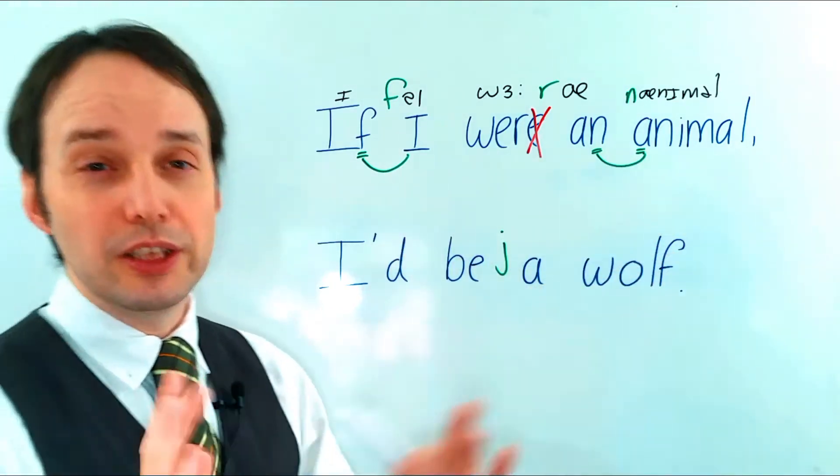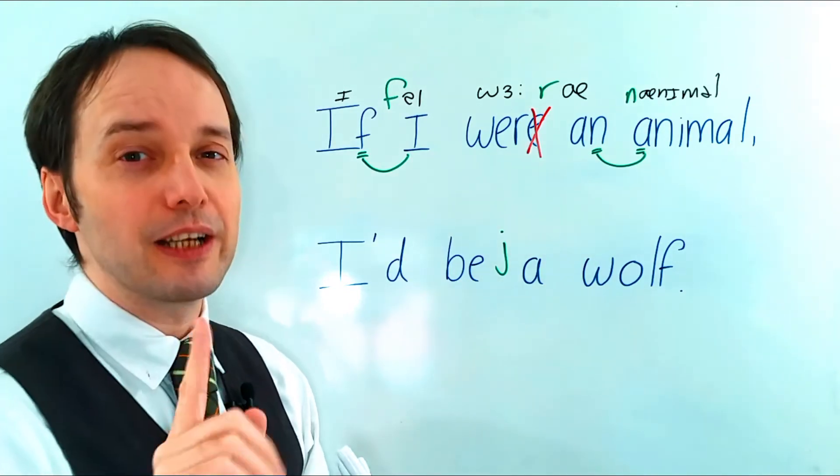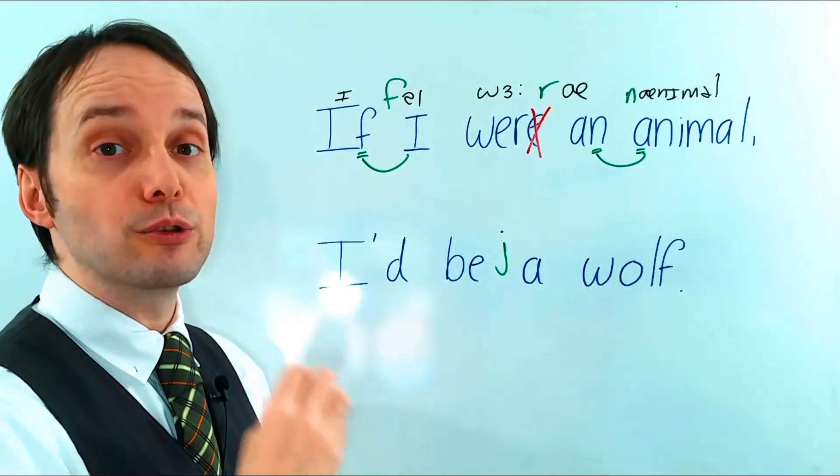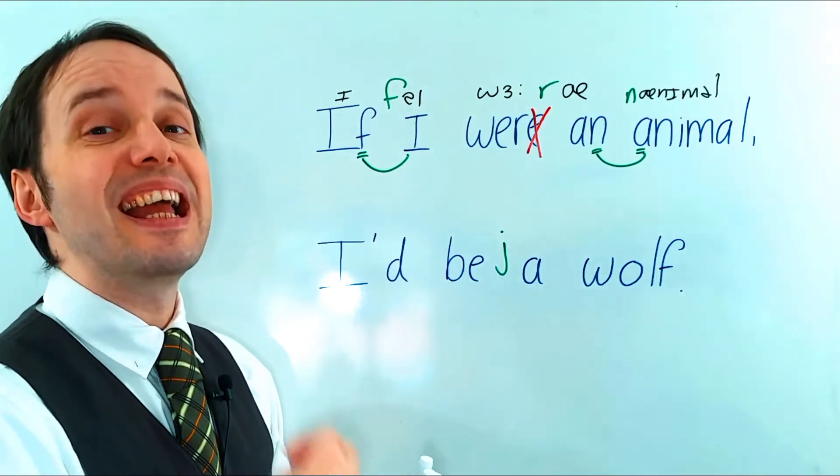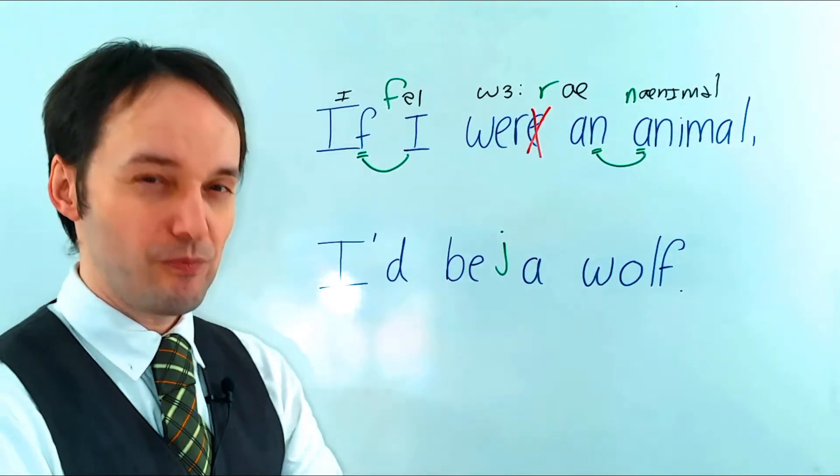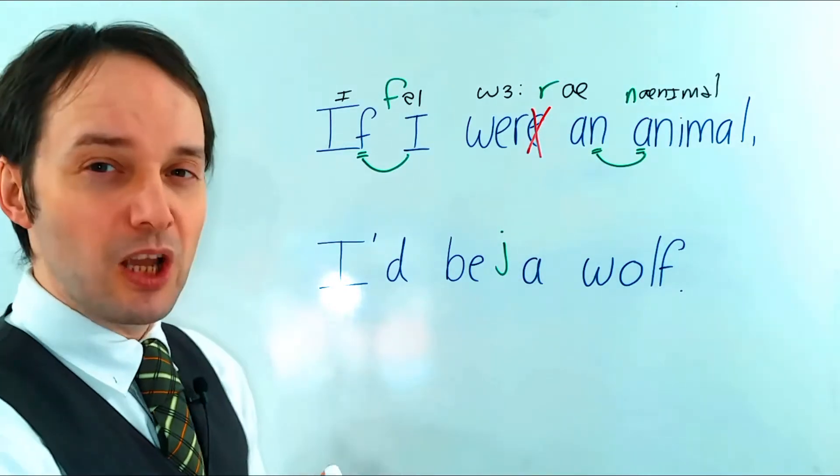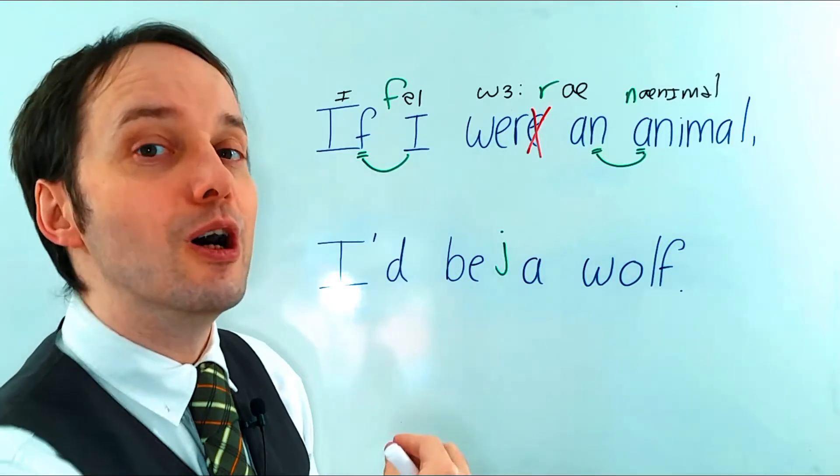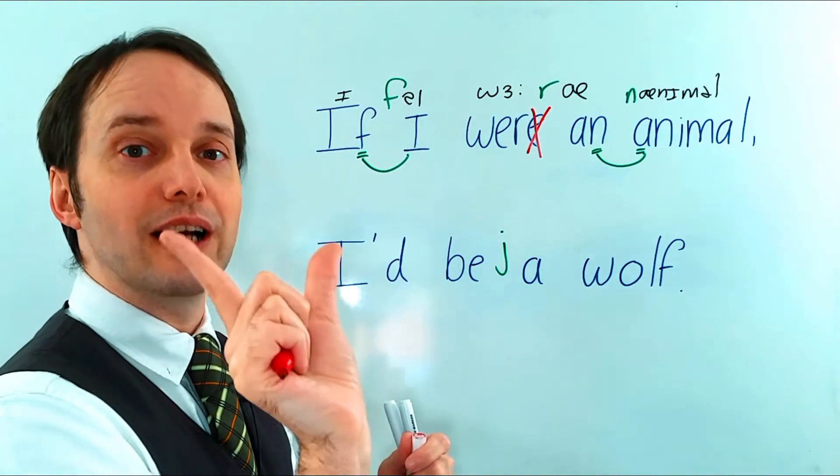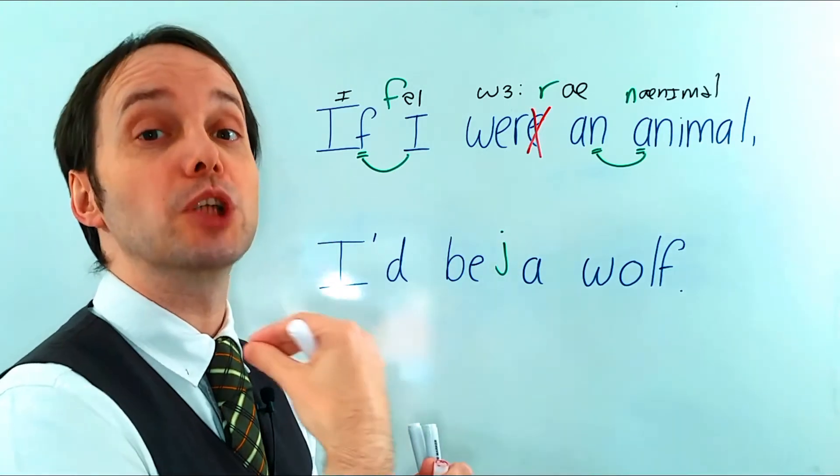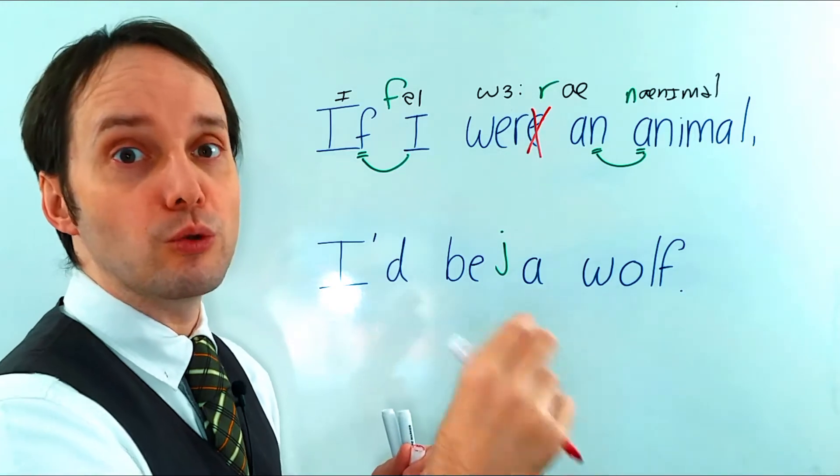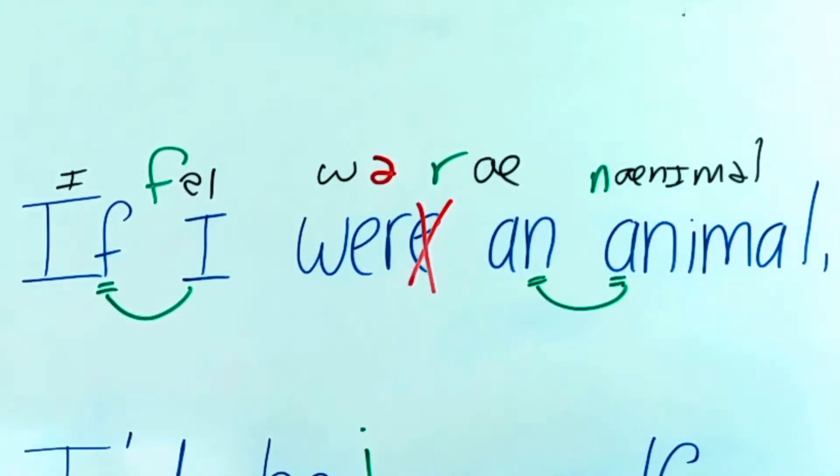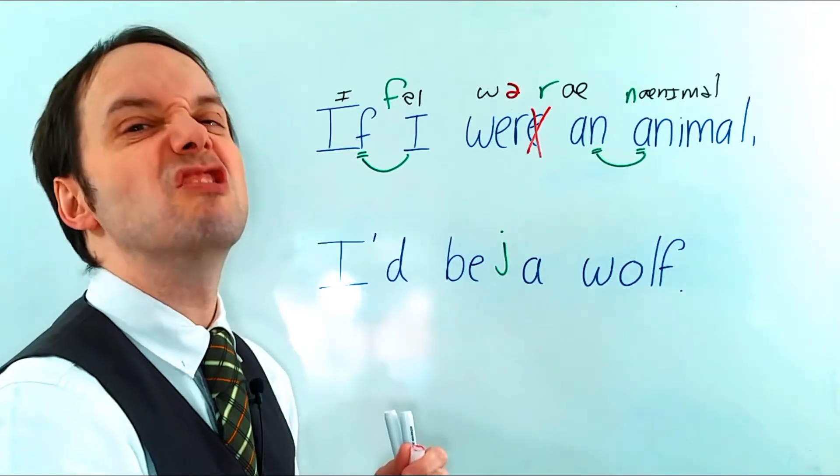Okay, so let's start with the conditional clause again. Listen very carefully, what schwa sounds can you hear? If I were an animal? If I were an animal? Can you hear any? Actually, the first one is here. Not 'if' I were an animal. The 'i' sound becomes shorter, becomes weaker, becomes 'uh'. If I were an animal.